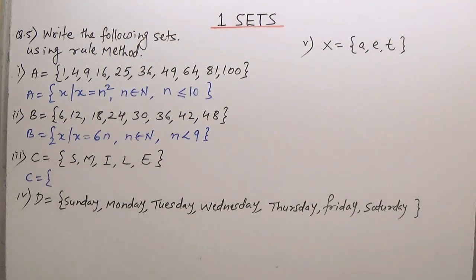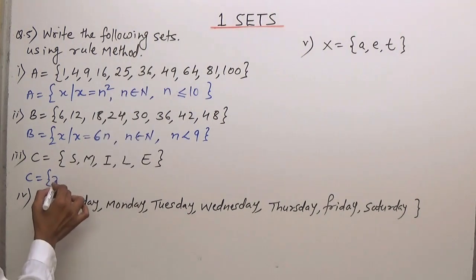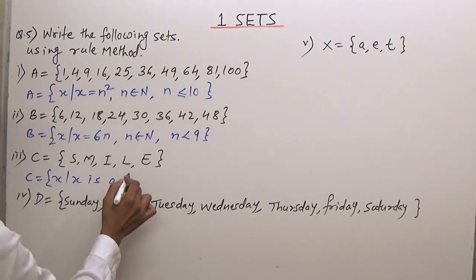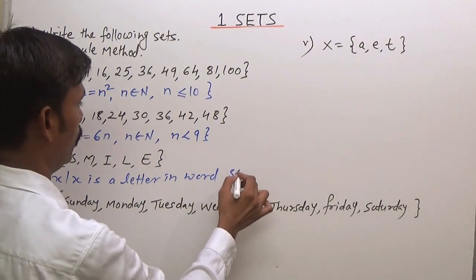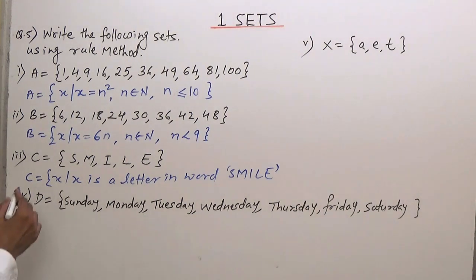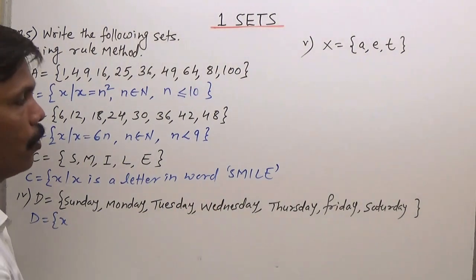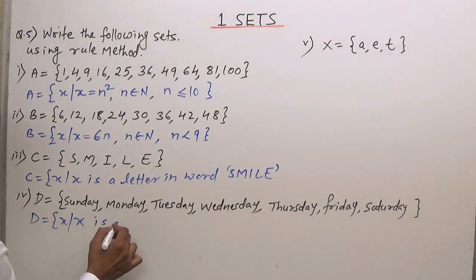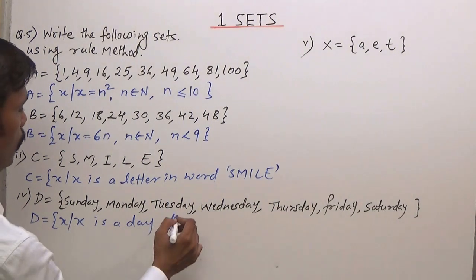Third question: the set of letters from the word 'smile.' So set C = {x | x is a letter in the word 'smile'}. Fourth question: Sunday and Monday — days of the week. D is the set of all x such that x is a day of the week.